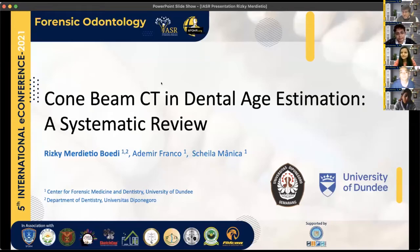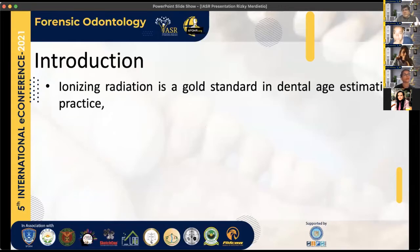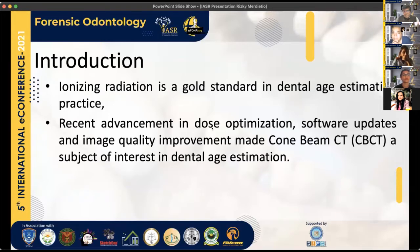I will talk about cone beam computed tomography in dental age estimation as a systematic review. In dental age estimation, ionizing radiation is the gold standard — although there are some recent studies using MRI, the gold standard remains ionizing radiation, whether it's periapical, panoramic, or CBCT. CBCT is mostly avoided due to dosage concerns, but recent advancements in technology, dose optimization software, and image quality improvement make low-dosage CBCT a subject of interest for dental age estimation, mostly for use in living patients.